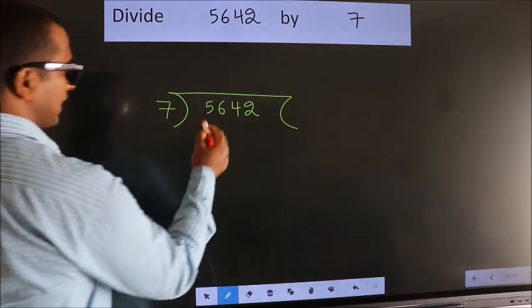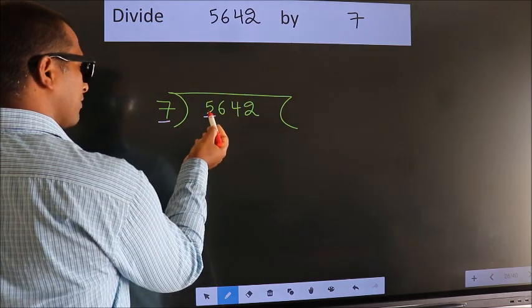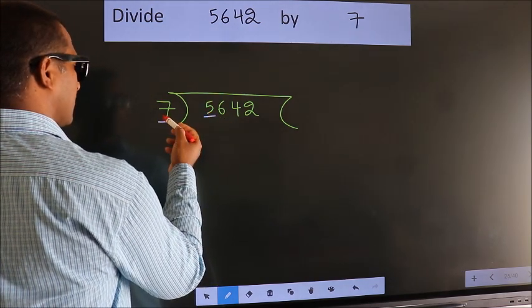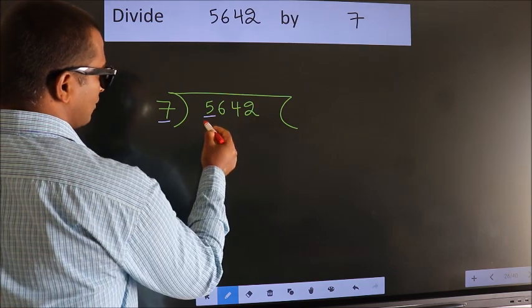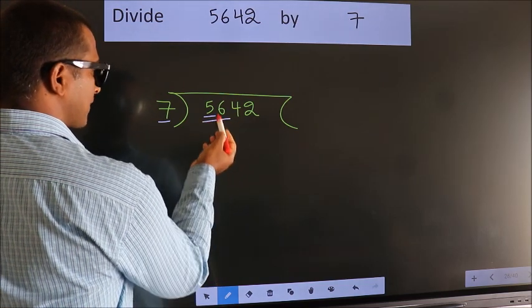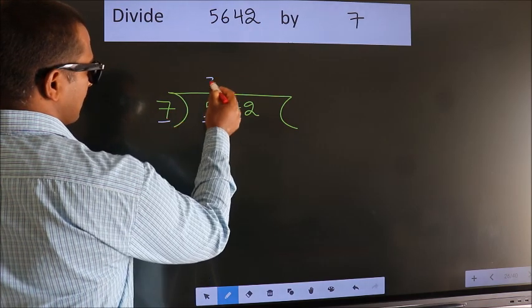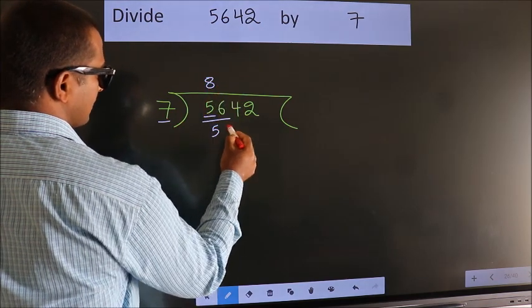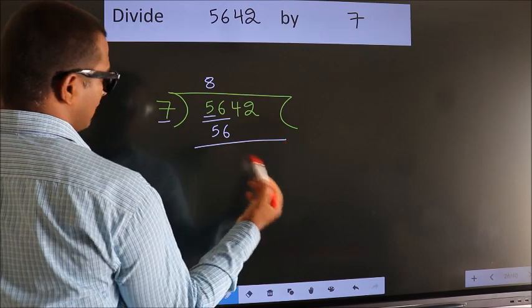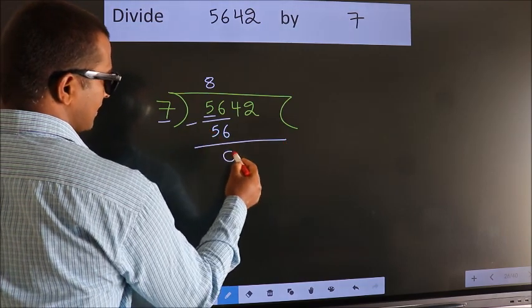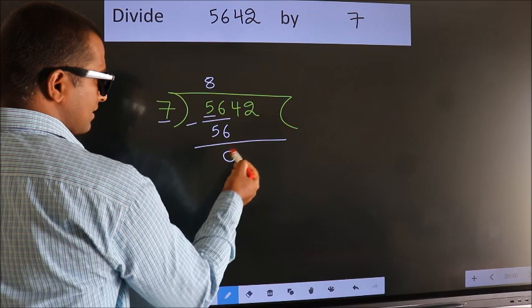Next, here we have 5. Here 7. 5 smaller than 7, so we should take 2 numbers: 56. When do we get 56? In 7 table. 7 eights 56. Now we should subtract. We get 0.